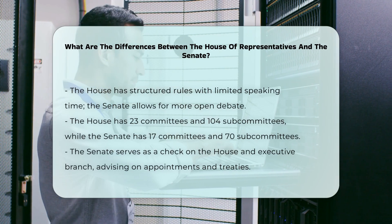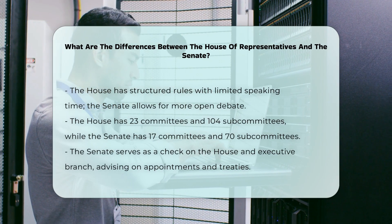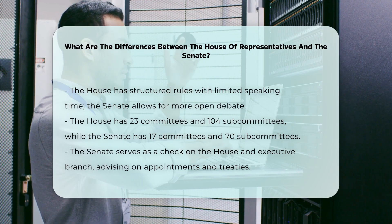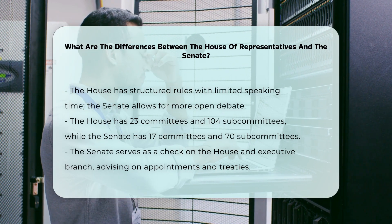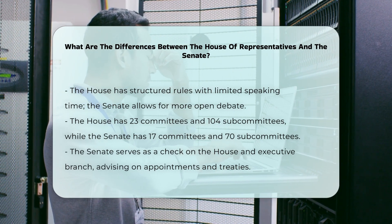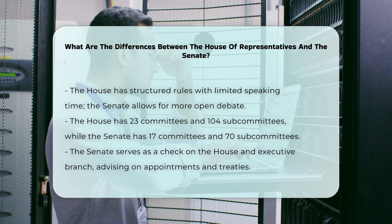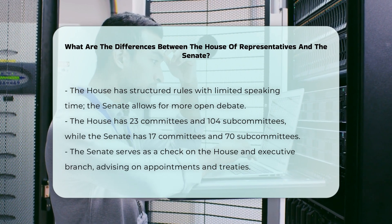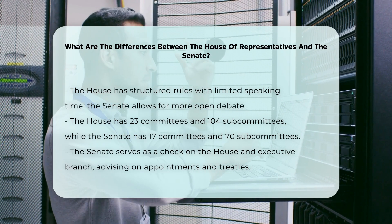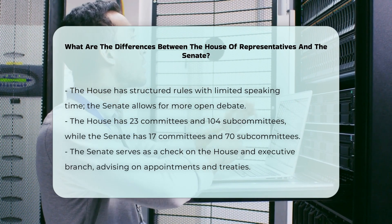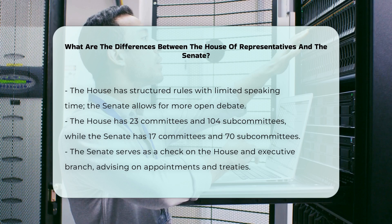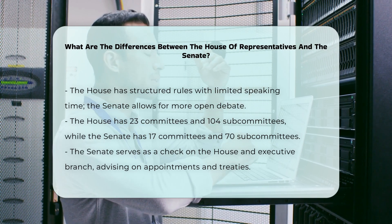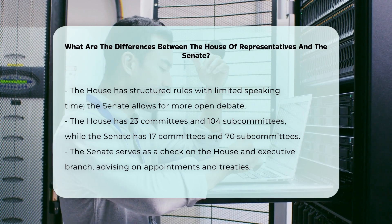Committee system. Both chambers use a committee system to review and develop legislation. However, the House has 23 committees with 104 subcommittees, while the Senate has 17 committees with 70 subcommittees. These committees allow members to gain expertise in specific policy areas.